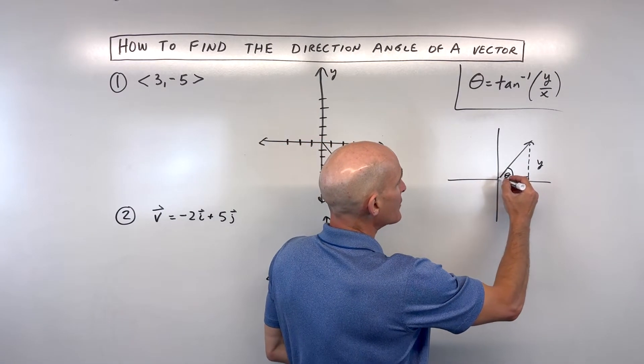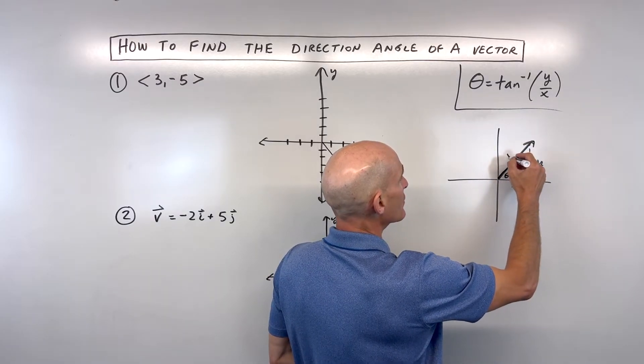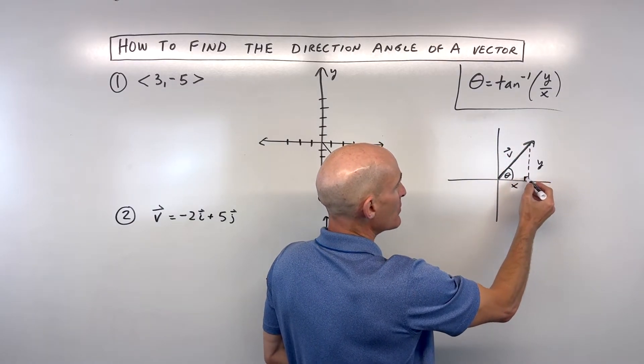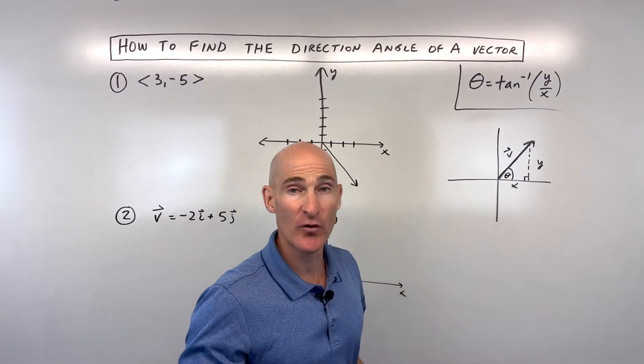When you look at your vector, if you were to drop a perpendicular to the x-axis, you can see that a right triangle is formed.